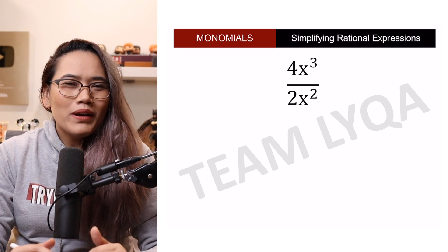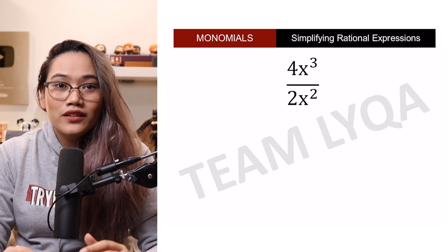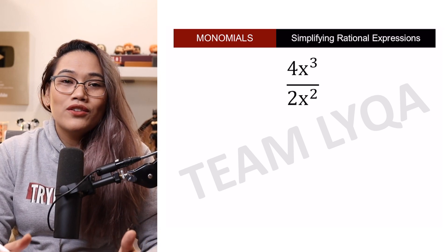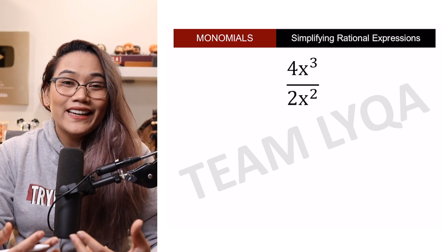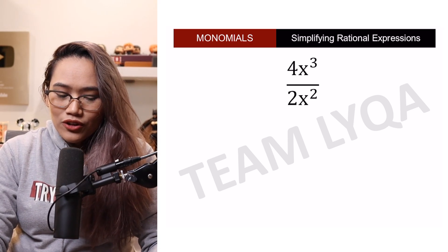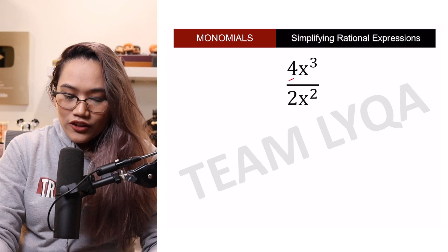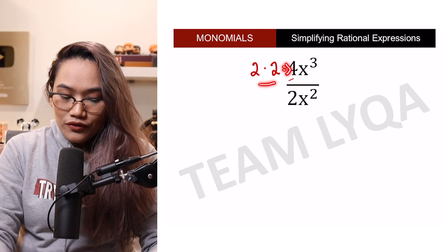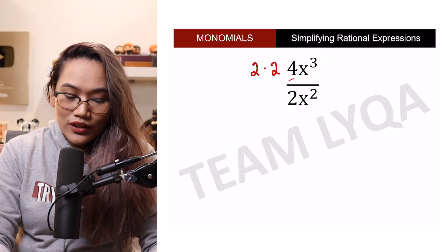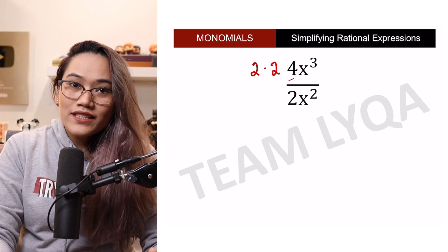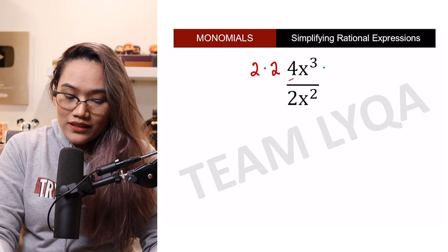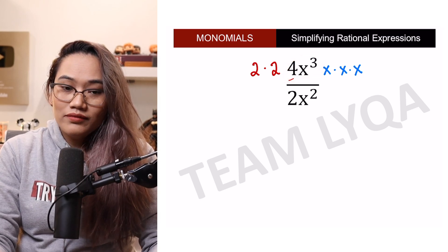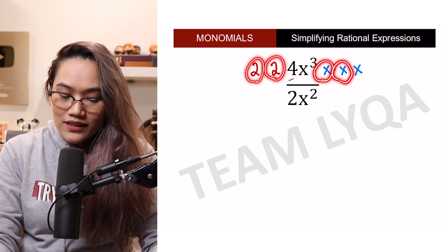Now, kung nagtataka kayo kung bakit natin ito ginagawa, meron din tayong video on dividing fractions by cancellation at it's the same concept — kung ano yung meron sa taas at meron din sa ibaba, pwede natin i-cancel. So, para malaman ko yung sagot, pwede kong i-split yung 4 into 2 and 2, kasi 2 times 2 is equal to 4. Now, yung x cubed naman, pwede ko rin silang paghiwahiwalayin. Ang x cubed or x raised to 3 just means tatlong x. So itong 4x cubed equivalent sa 2 times 2 times x times x times x.